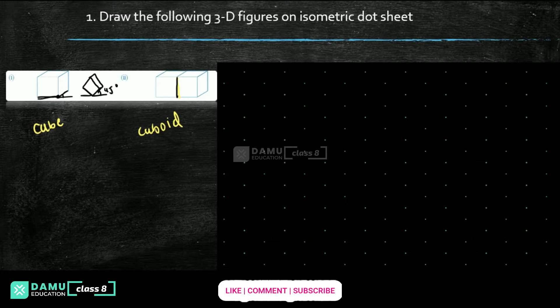Let's draw like that. These are all 1 centimeter. I will start at one corner point. From this point I am starting — going up to 2 centimeters. Let's take 2 centimeters like this. Here also 2 centimeters, and up also 2 centimeters.